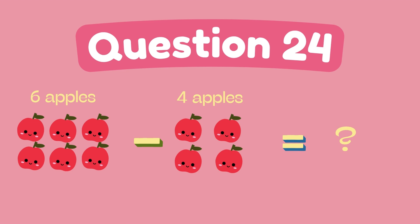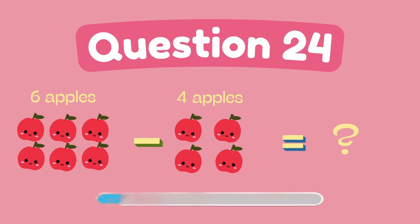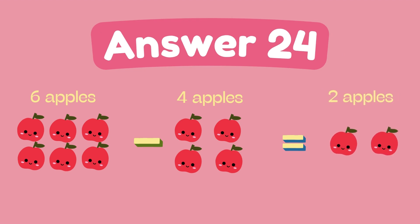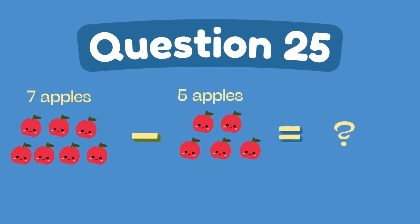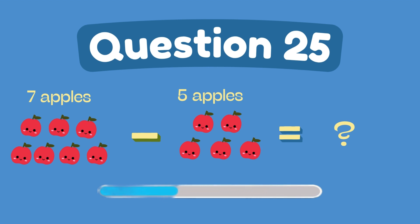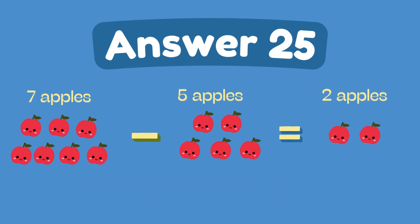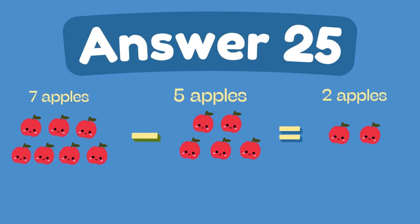What is 6 minus 4? The answer is 2. What is 7 minus 5? The answer is 6.